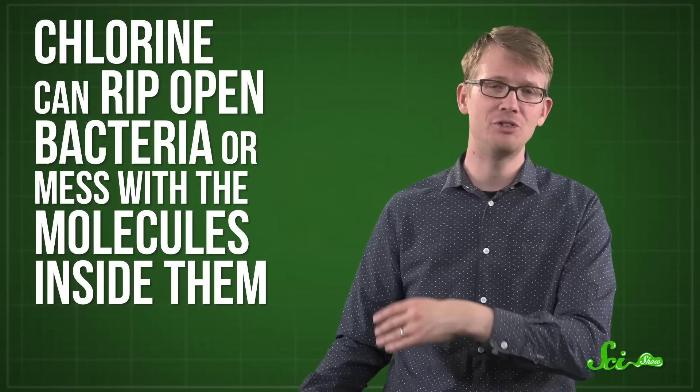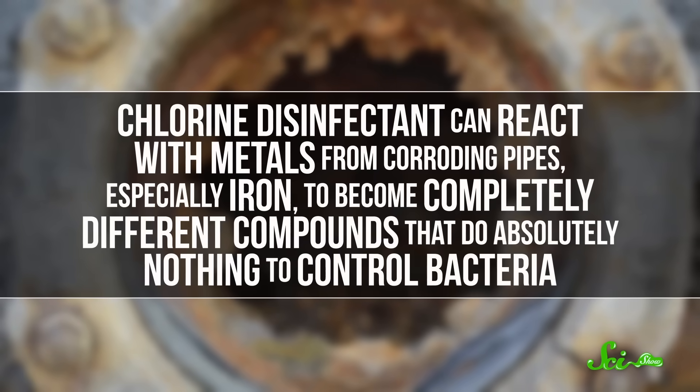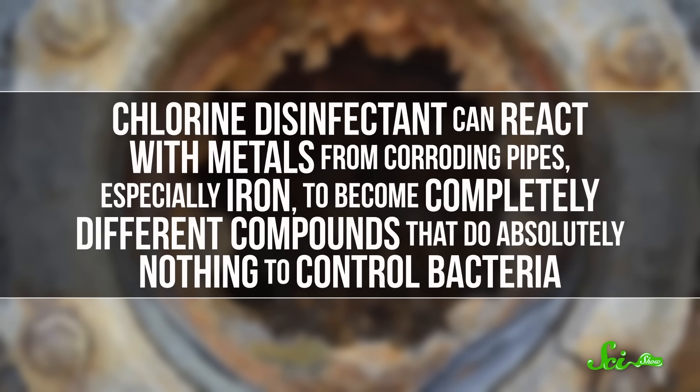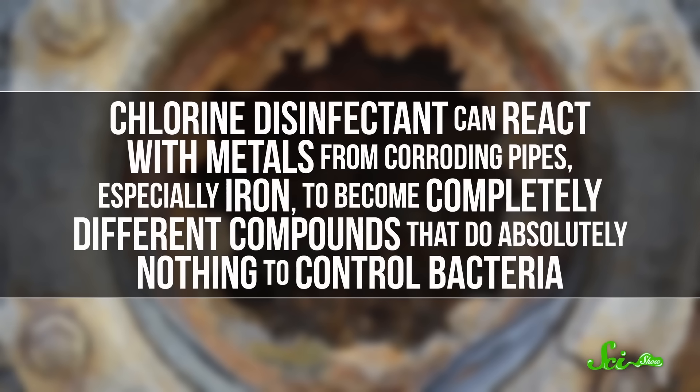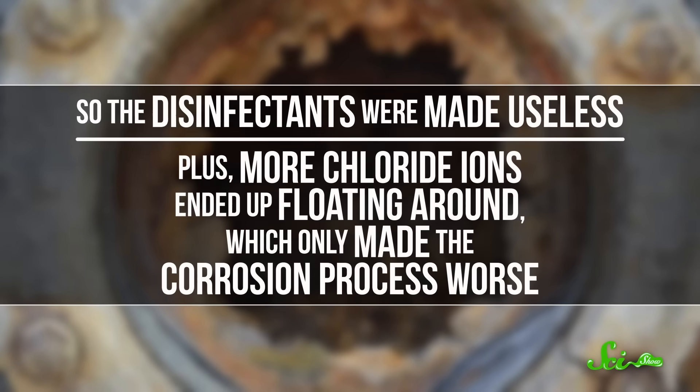The river water wasn't just extremely dangerous though. We know how to treat water. We put in disinfectants like chlorine, which can rip open bacteria or mess with the molecules inside them. But it turns out that chlorine disinfectant can react with metals from corroding pipes, especially iron, to become completely different compounds that do absolutely nothing to control bacteria. So the disinfectants were made useless.